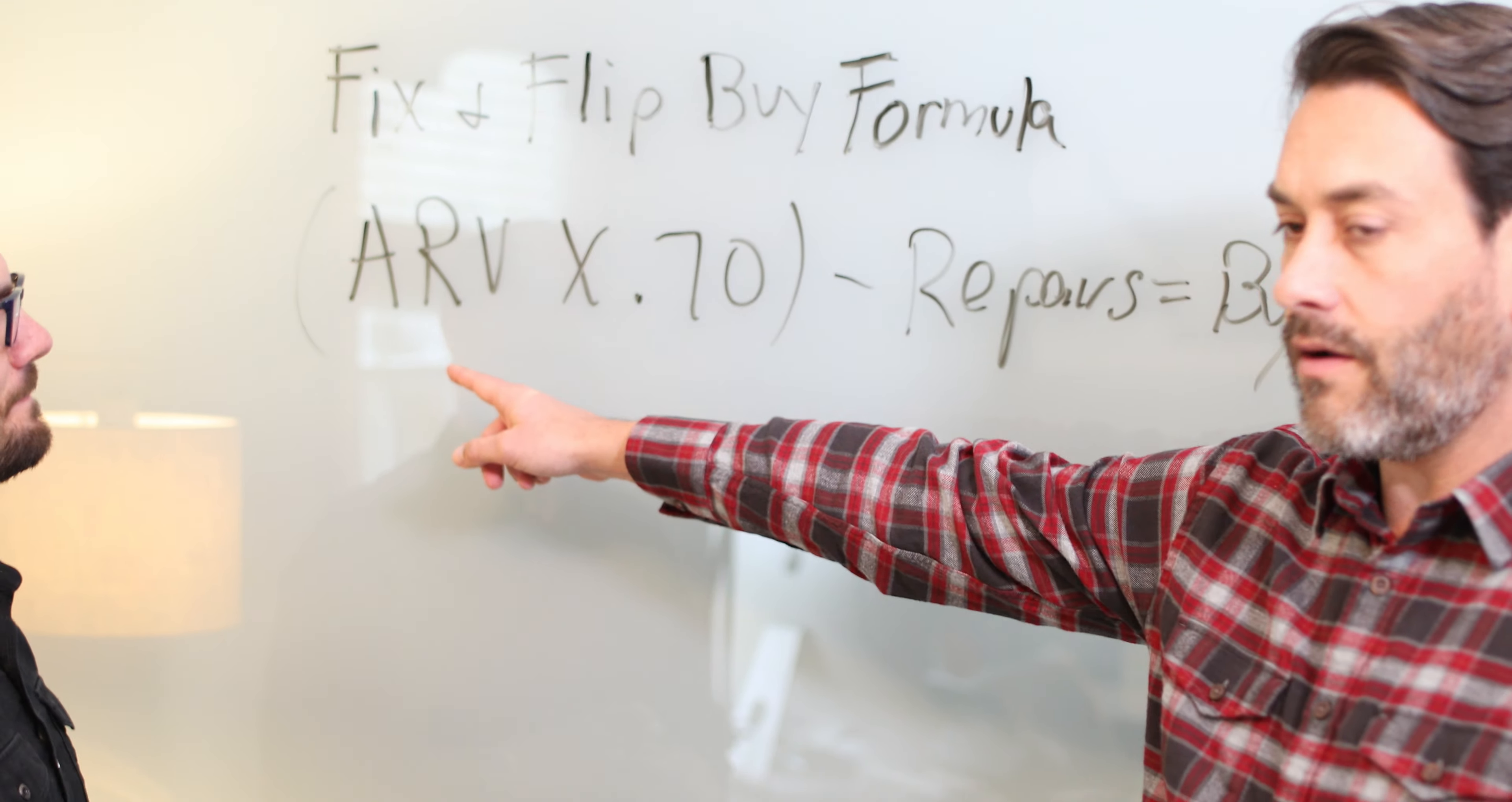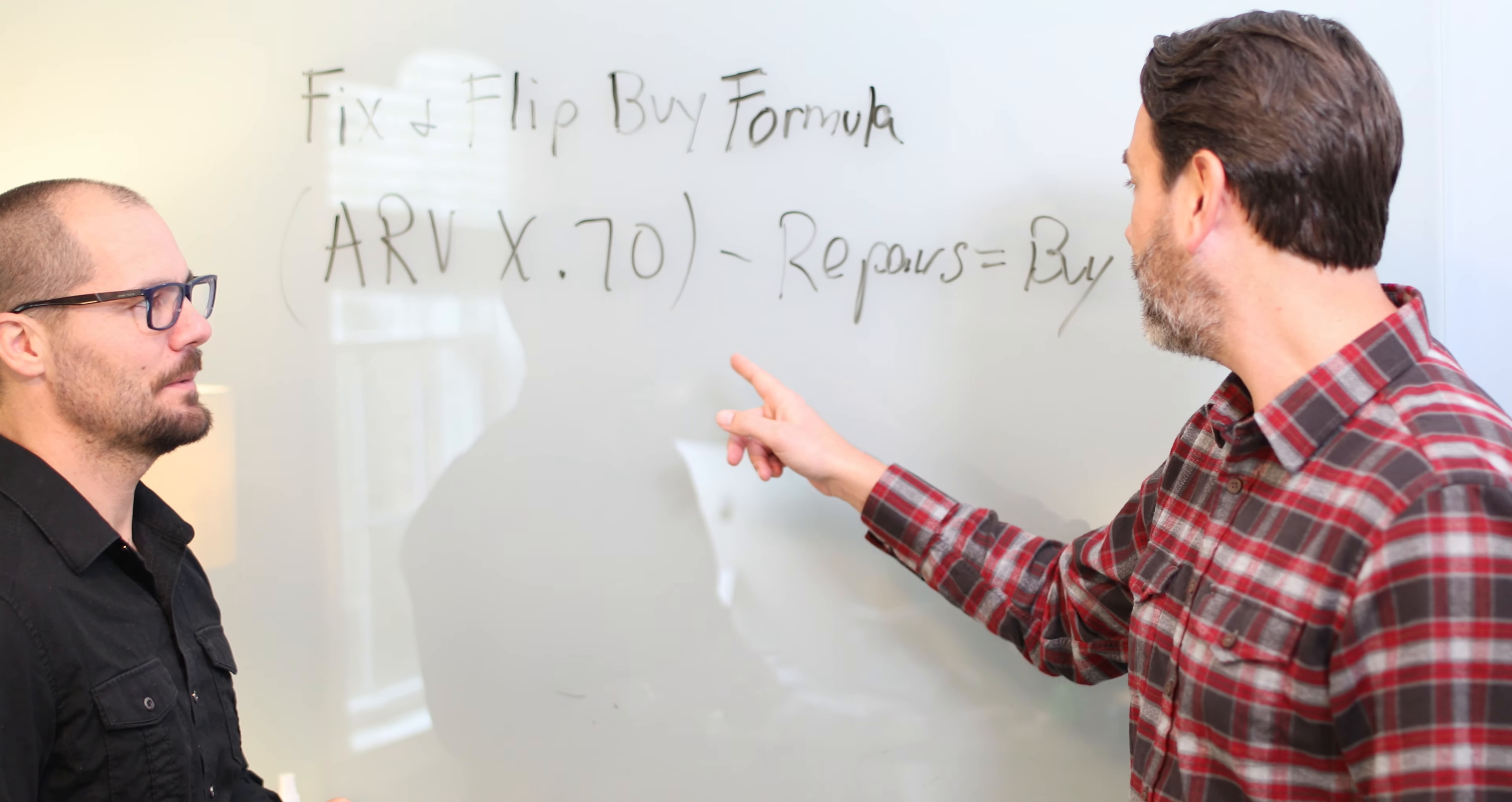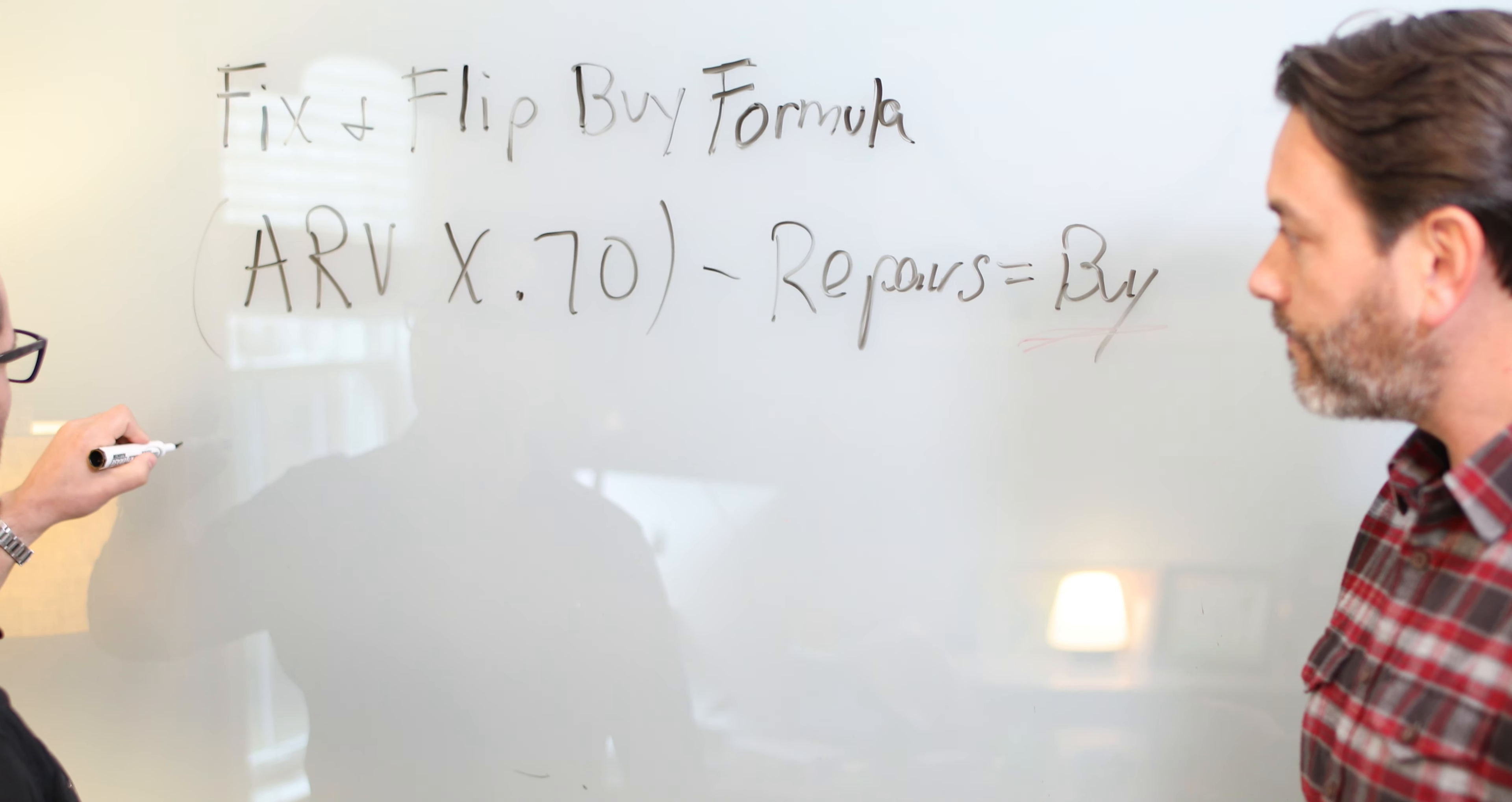It's like Matt Damon in Good Will Hunting. So after repair value times 0.7, right? Because that 30% is going to be our margin to work with, right? Minus those repairs equals our buy. That's how much we want to pay for this property. So if we do this, if we take this 70%, basically what we're doing is we're taking 30% off.